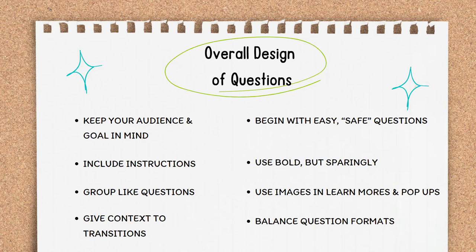We've already talked about grouping like questions with like because those groups form the basis of your step system within your interview. When you transition your end user from one step to the next, make sure to give them context. Just like a well-written essay will transition between paragraphs, so too should your steps. It can be very simple, like: I finished asking you questions about your spouse. Now I'm going to ask you questions about your children. The bullet points on the right-hand side here come from an experienced author when I first started with A2J Author.